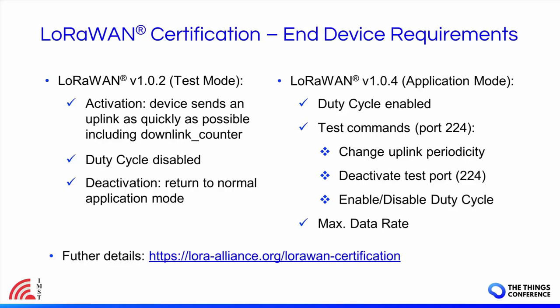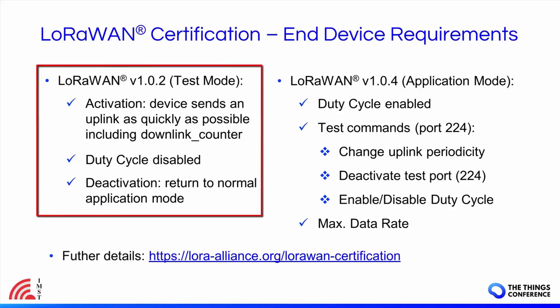You should ensure that you are following the correct document, as the test application has been modified for the update of the LoRaWAN certification for version 1.0.4. If you are preparing your end device for version 1.0.2, you should provide a test mode implementation. This includes several test commands for its control, such as test mode activation, deactivation, echo command, and selection of confirmed or unconfirmed uplinks. Once test mode is activated, the end device must stop its standard application and disable the duty cycle restrictions.